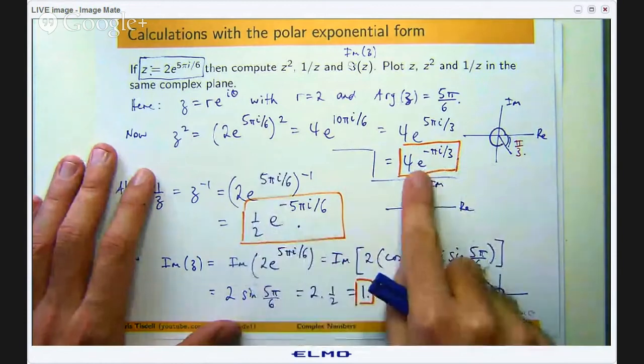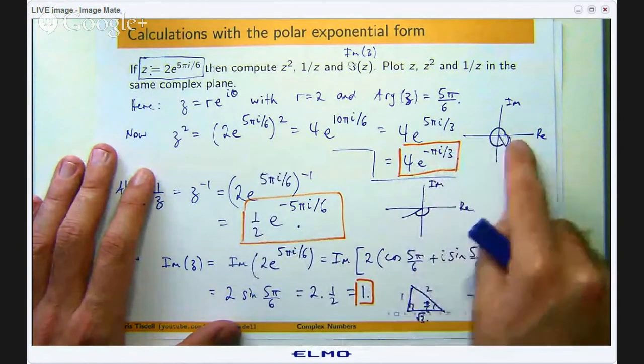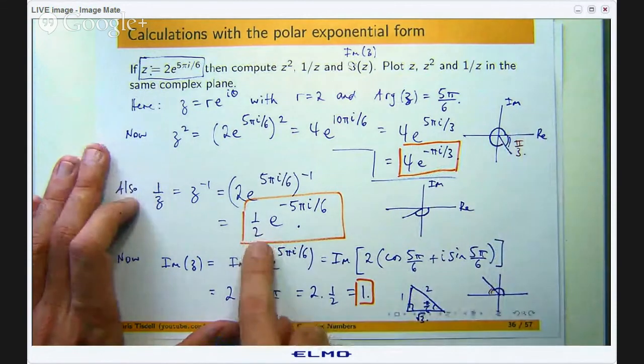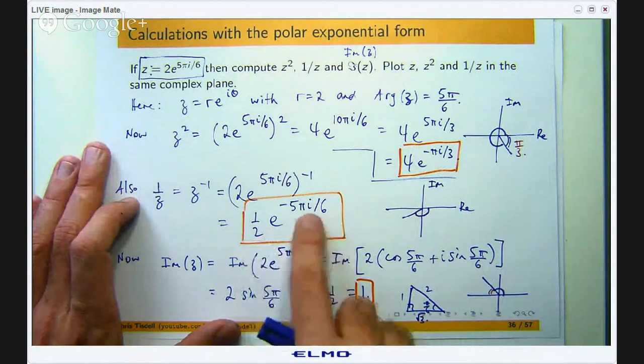Well for z² we would go out 4 units and rotate π/3 radians in the clockwise direction. For 1/z we would go out from the origin 1/2 units and we would rotate 5π/6 in the clockwise direction.